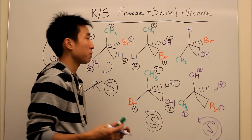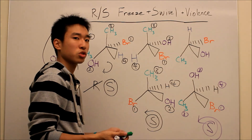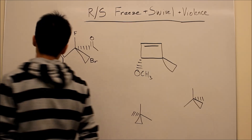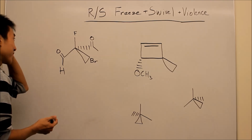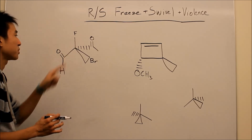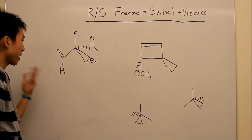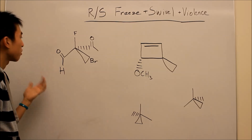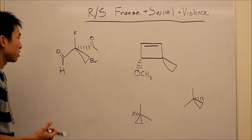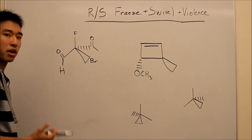If you want to see more complicated examples where you don't have hydrogen as the lowest group, watch my next video. So this next one is a more complicated example because I threw in some functional groups. Pause your video and rank the different substituents from 1 to 4, with 1 being the highest and 4 being the lowest, and we'll go on from there.